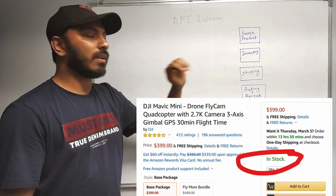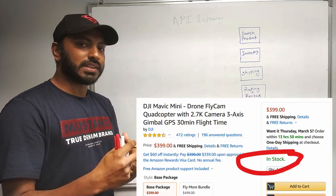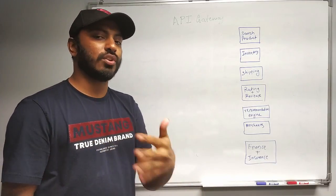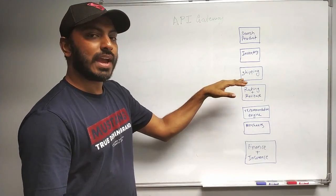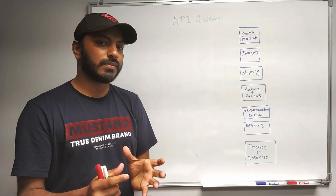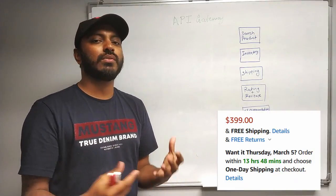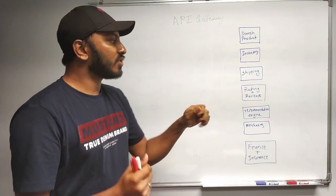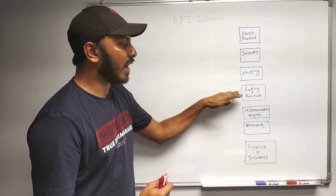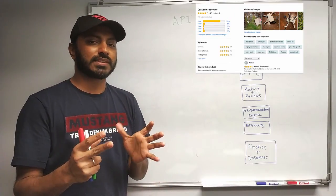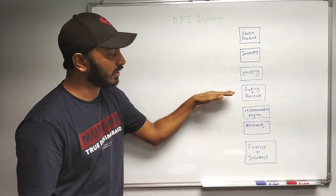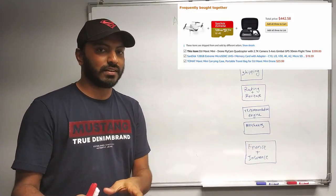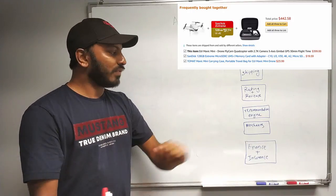The next thing is the inventory microservice. From here we can get the number of items or the product available in the nearby inventory according to your pin code entered in your profile. Next we need to access the shipping microservice, where we might get information on what is the earliest date you might receive the product. And then we need to access the rating and reviews of this product — that will be a separate microservice. We also need a recommendation engine to show frequently bought together or what other customers who bought this also bought.